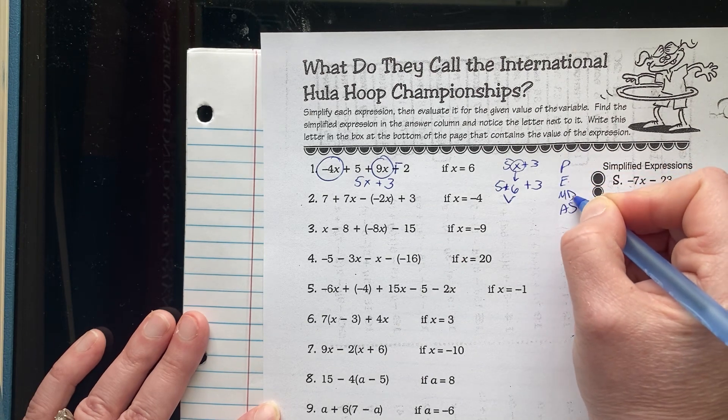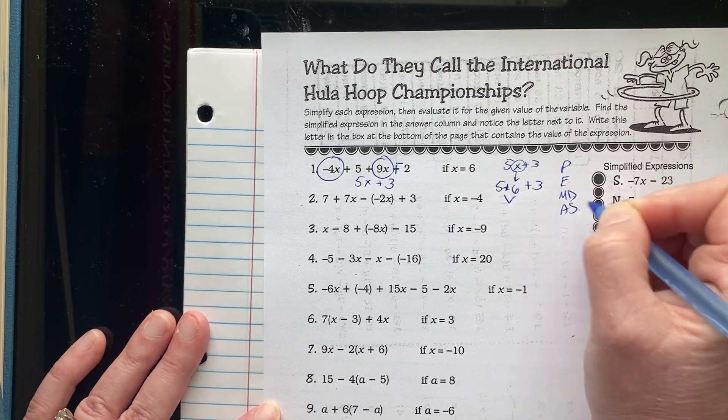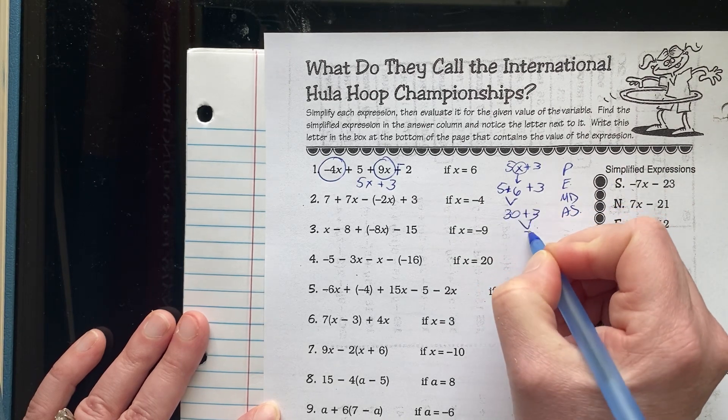Parentheses, exponents, multiplication and division from left to right, addition and subtraction from left to right. 30 plus 3 is 33.